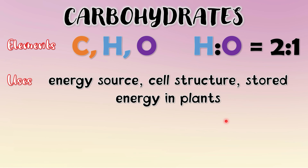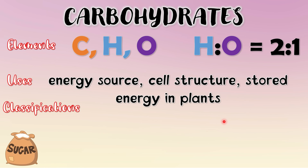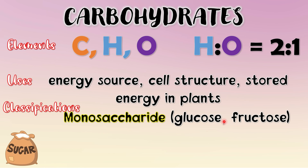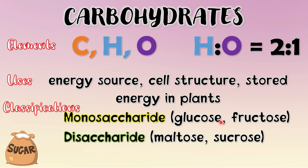Carbohydrates are classified according to how many subunits they contain. Simple carbohydrates are called sugar. A sugar made of one unit is called a monosaccharide. Our example, glucose or blood sugar, is a monosaccharide. Another one is fructose, which comes from fruits. When two monosaccharides are joined together, we have a disaccharide. Examples are maltose and sucrose.